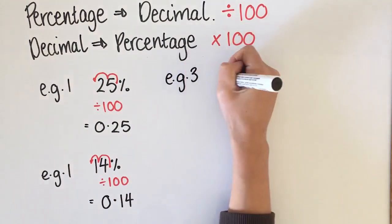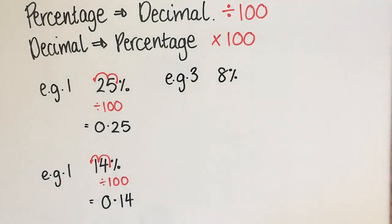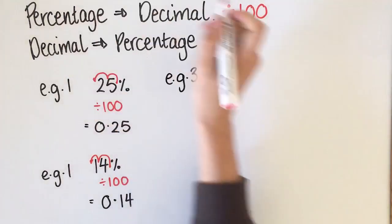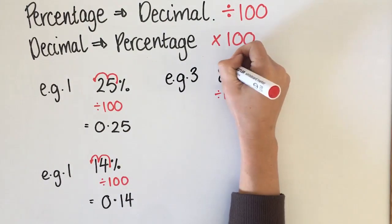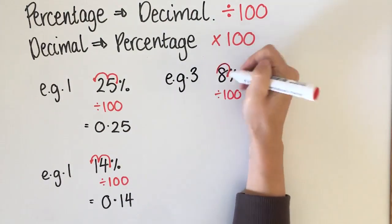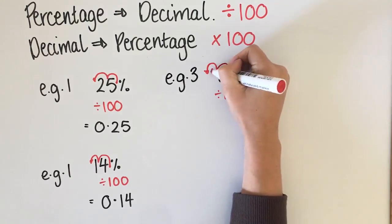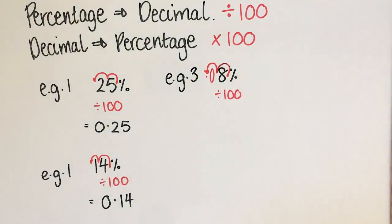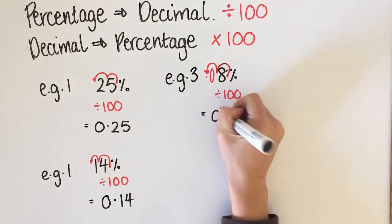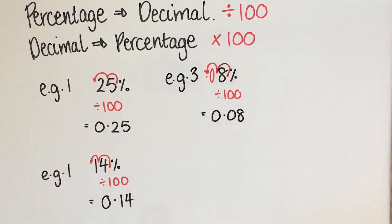This one's a little bit different — let's do 8%. Going from a percentage to a decimal means dividing by 100 and moving the decimal point twice. I don't have anything to jump over there so I'm going to put a zero, and my answer will be 0.08 — that's the decimal equivalent of 8%.